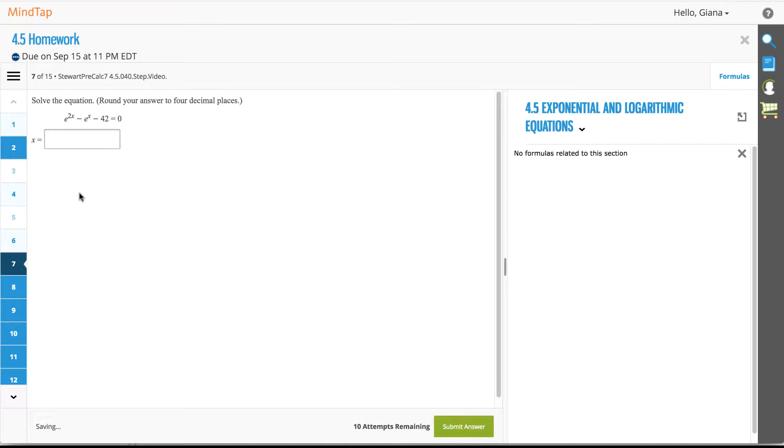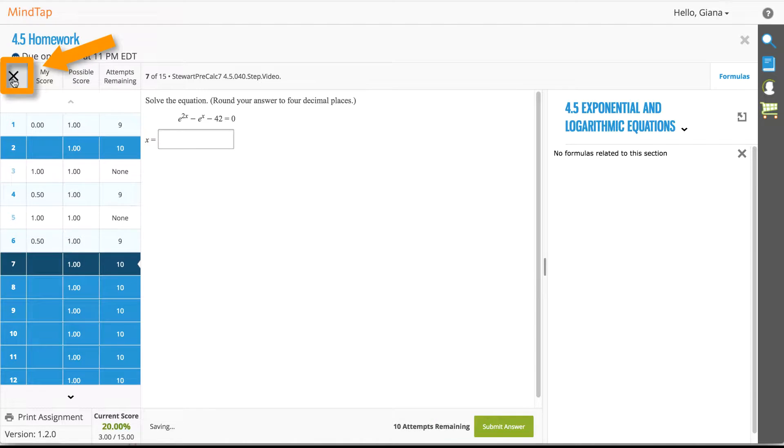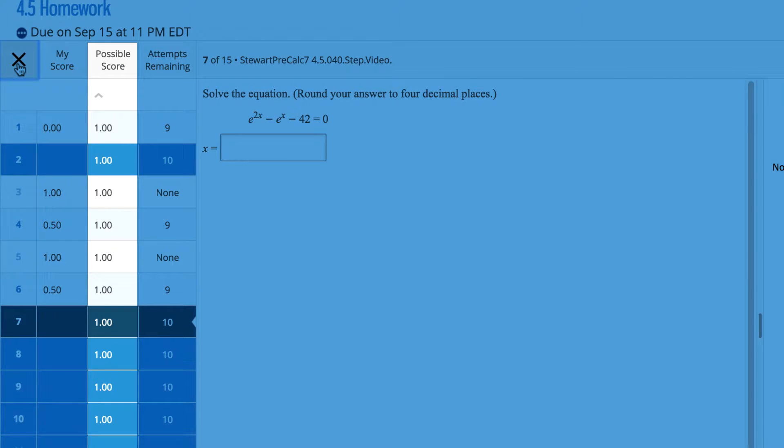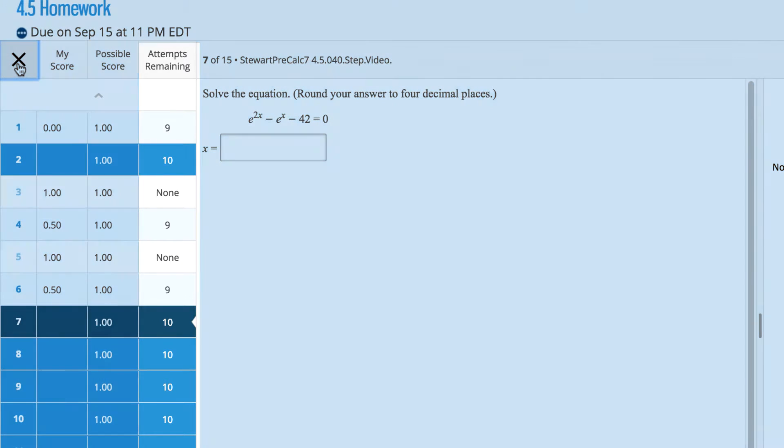The number box will be light blue on the left-hand side indicating that you attempted the problem. When you answer correctly, the box is navy blue. By clicking the menu icon above the list of problems, your score, the possible score, and attempts remaining for each problem are displayed. Click the X to close the window.